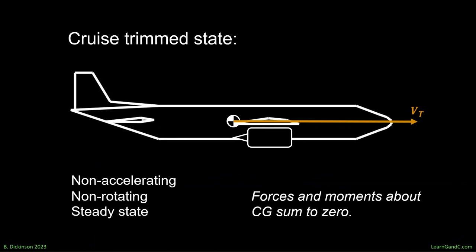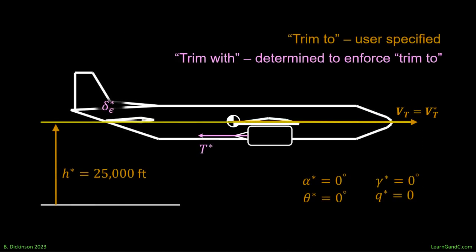We'll first trim to an aircraft cruising in steady state. We specify the trimmed to variables, α, θ, pitch rate, and γ, all as zero, with altitude of 25,000 feet. We can attempt to trim at various speeds, but the aircraft will have a tendency to trim best at a specific speed. In this example, we'll vary the trim to variable VT or airspeed to determine the most successful trim to state for the cruise phase of this aircraft.